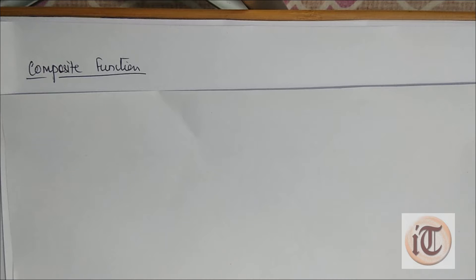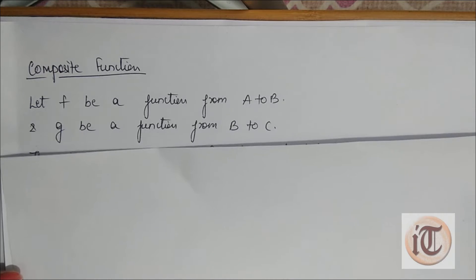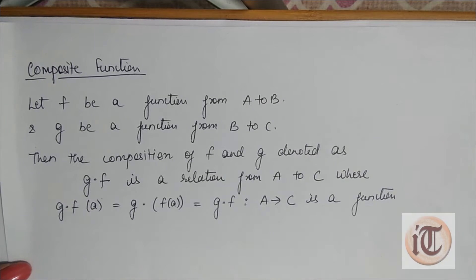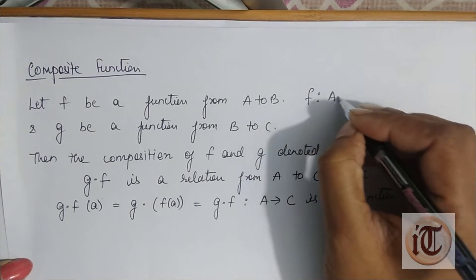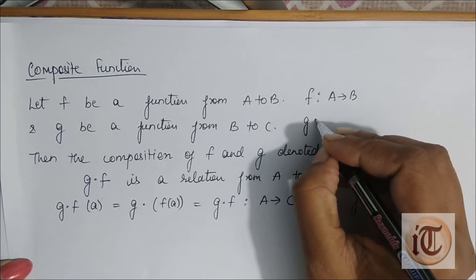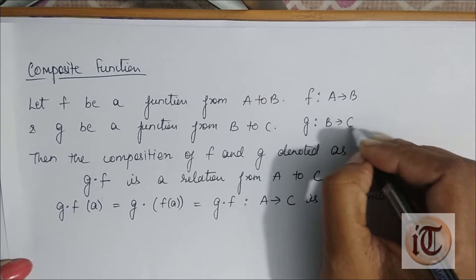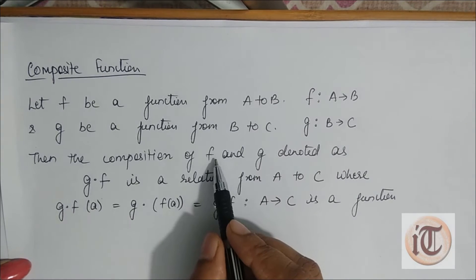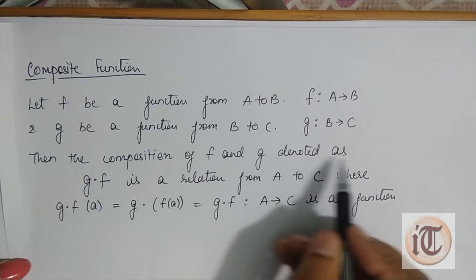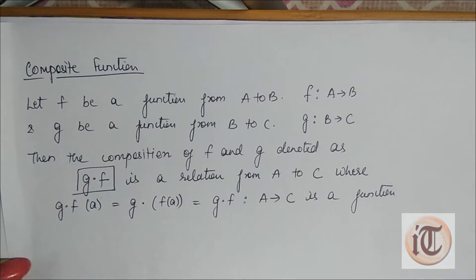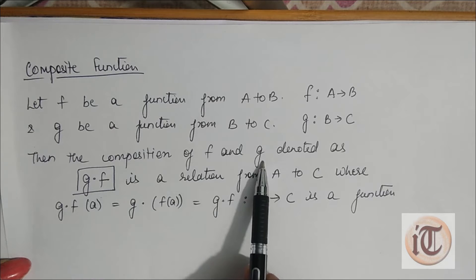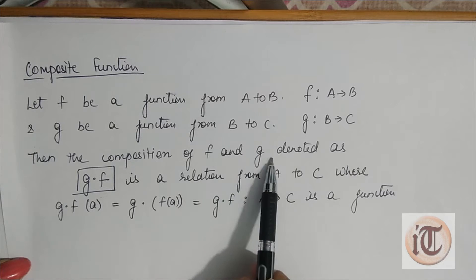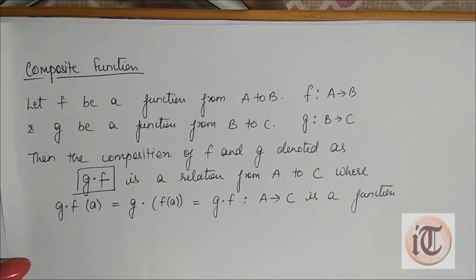Suppose f is a function from A to B and g is a function from B to C. Then the composition of f and g is denoted as g dot f — not f dot g. It is denoted g dot f. This is the important part.